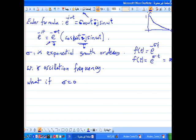What if σ equals zero? σ equal to zero means e^(-σt) equals 1. What remains is cos(ωt) + j·sin(ωt). How will this appear in the graph? It will have a normal frequency.